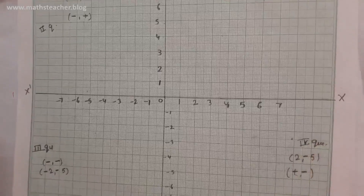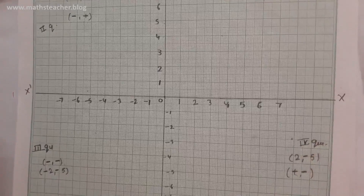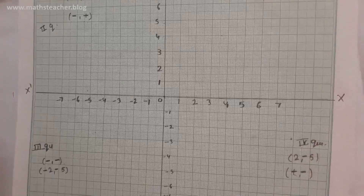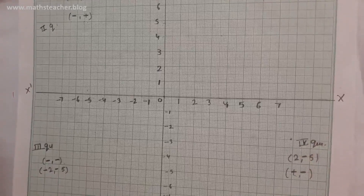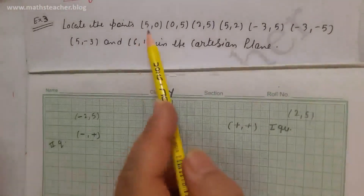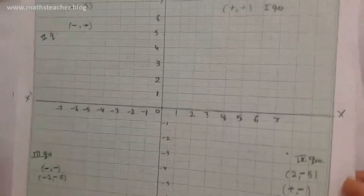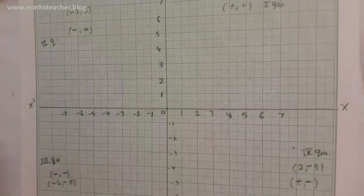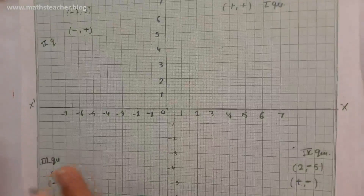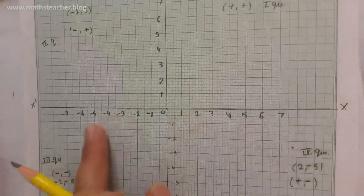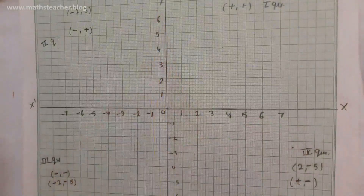Now I will tell you two methods — both methods — which is the easy way to find and plot any coordinate. The first point to plot is (5, 0). This 0 will confuse you, so always remember: on the x-axis, y equals 0, and on the y-axis, x equals 0.